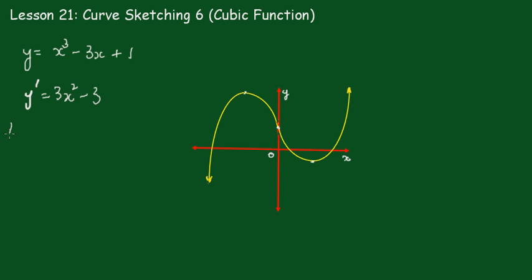We'll let y dash equals 0 to locate these points, so 3x squared minus 3 equals 0. Let's put 3x squared equals 3, x squared equals 1, so x equals plus or minus 1.